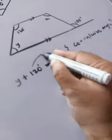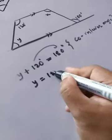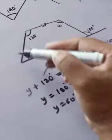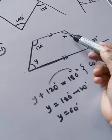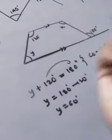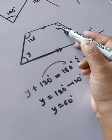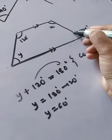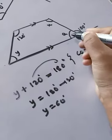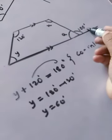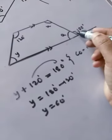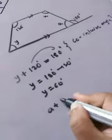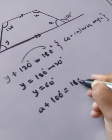Transposing 120°: y = 180° − 120° = 60°. Now we also need to find x. Let's take this adjacent angle as a. This angle and the exterior angle of 100° are a linear pair, so their sum equals 180°. Therefore: a + 100° = 180°. Always give the reason — in geometry, stating the reason is very important. Transposing: a = 180° − 100° = 80°.